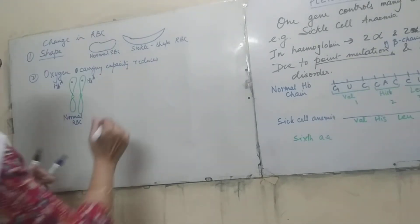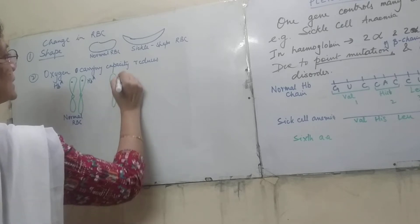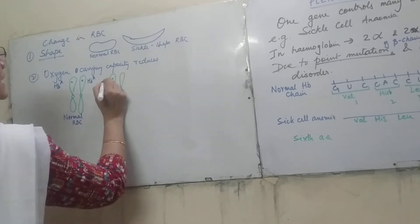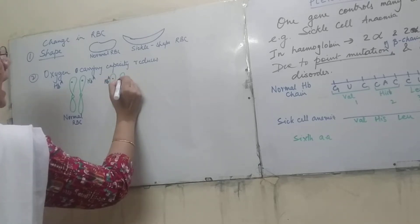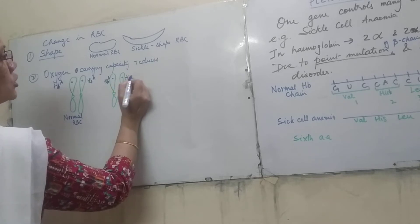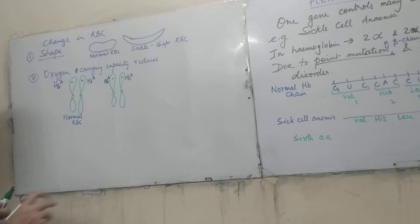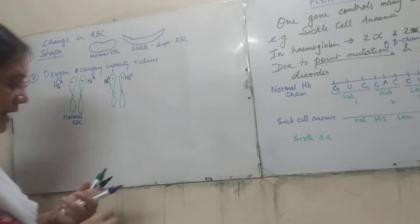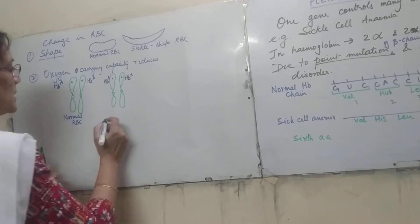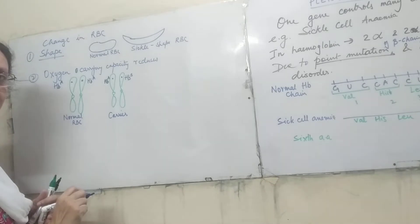In some cases, a person may have a mutation in one of the alleles. So one allele is HbA and the mutation produces HbS. This person is actually a carrier of the gene — they carry the gene that causes sickle cell anemia.